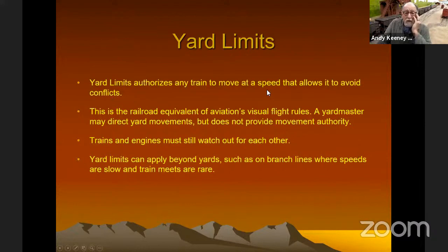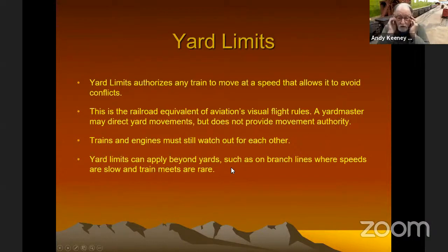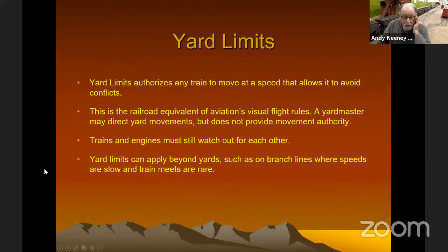Yard limits authorize a train to move at a speed that allows it to avoid conflict. This is the railroad equivalent of aviation's VFR — visual flight rules. The yard master may direct yard movement but does not provide movement authority through the yard limits. Trains and engines must still watch out for each other. Yard limits can apply beyond the yard, such as on branch lines where speeds are slow and train meets are rare. I've got one branch line that I'm going to make the whole thing yard limits, so the crew doesn't have to have orders written — they just operate at a speed they can stop within assured clear distance if they see another train.